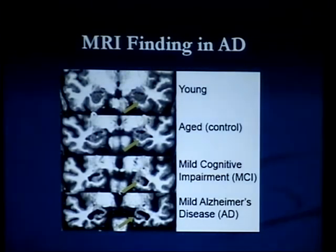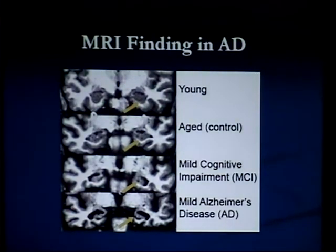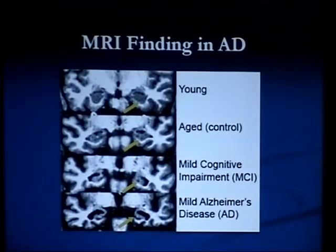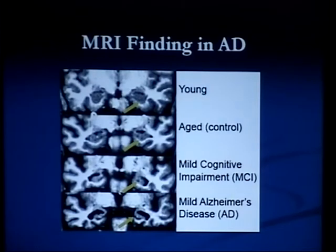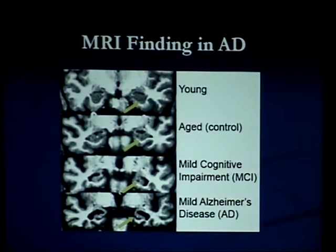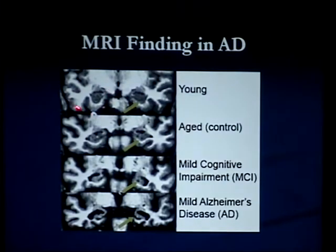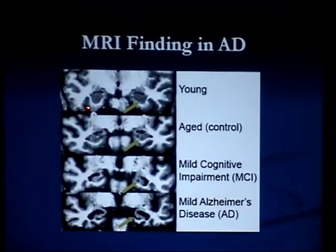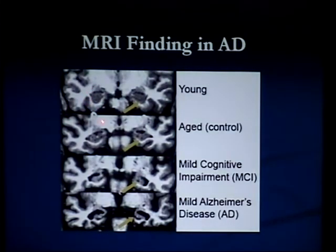But as the disease progresses, or if you have access to very sophisticated MRI technology, you can measure the actual volume of the memory centers or the temporal lobes. So these are some MRI findings in Alzheimer's disease. This is now a young patient with these nice, full mesial temporal lobe structures, or hippocampi.